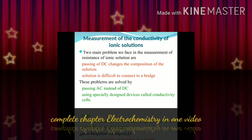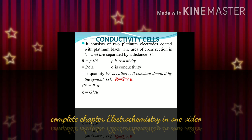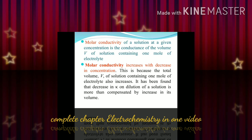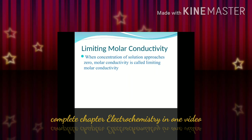Two main problems we face in the measurement of resistance of ionic solutions. This is about the conductivity cells, where R = ρ·L/A, ρ is resistivity, and κ (kappa) is conductivity. The variation of conductivity and molar conductivity with concentration: conductivity always decreases with decreasing concentration.